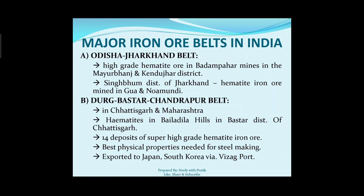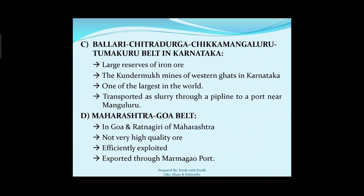The second is the Durg-Bastar-Chandrapur belt in Chhattisgarh and Maharashtra. Hematite is found in the Bailadila hills in the Bastar district of Chhattisgarh. There are 14 deposits of super high-grade hematite iron ore here with the best physical properties needed for steel making. This iron ore is exported to Japan and South Korea via the Visakhapatnam port.